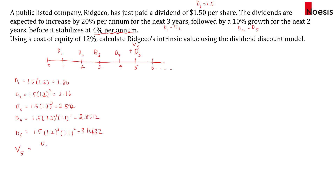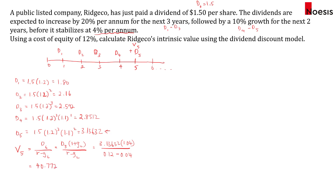Now we calculate V5 using the Gordon Growth Model: V5 = D6 ÷ (R − G), where G is the long-term growth rate. D6 is based on D5 multiplied by the long-term growth rate: 3.13632 × 1.04 = 3.26177. Dividing by (12% − 4%) gives an intrinsic value of $40.7722 at the end of year 5. Bear in mind: using a dividend in year 6 gives you the intrinsic value at the end of year 5.